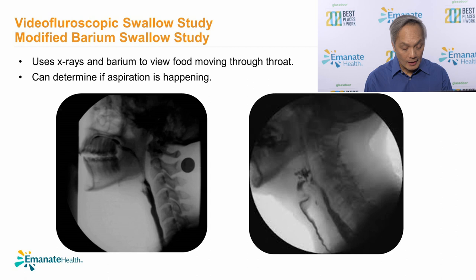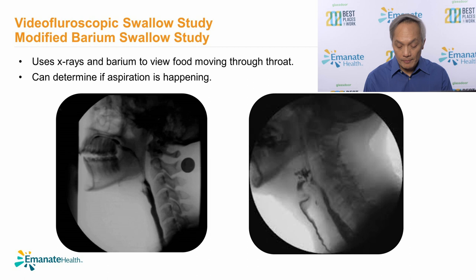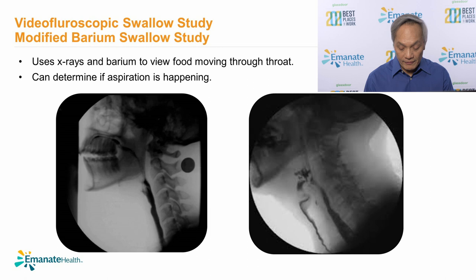Video fluoroscopic swallowing study, also known as the modified barium swallowing study, uses X-ray and barium to view food moving through your throat. This test lets a speech-language pathologist see if food goes into your airway instead of your stomach — looking to see if aspiration is happening. It also allows our speech pathologist to see what kind of food is safest for you to swallow and to direct swallowing strategies to help you swallow better.